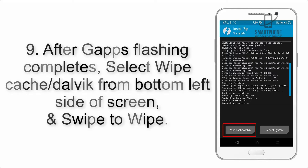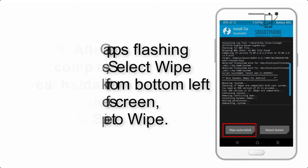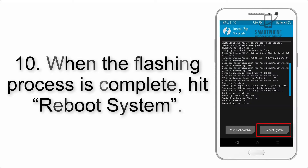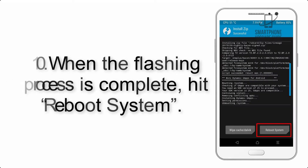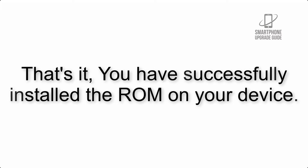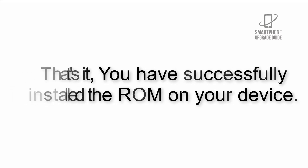Step 9: After GApps flashing completes, select Wipe Cache and Dalvik from the bottom left side of the screen and swipe to wipe. Step 10: When the flashing process is complete, hit Reboot System. That's it — you have successfully installed the ROM on your device.